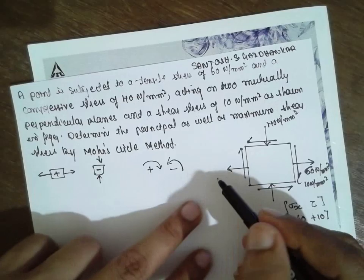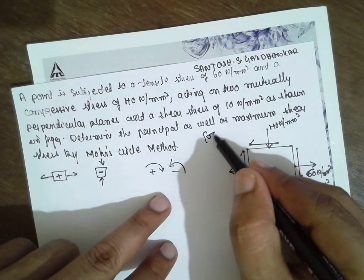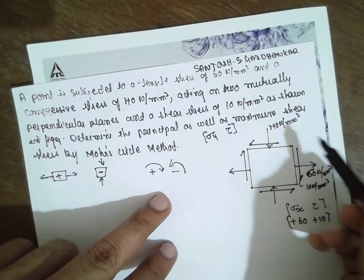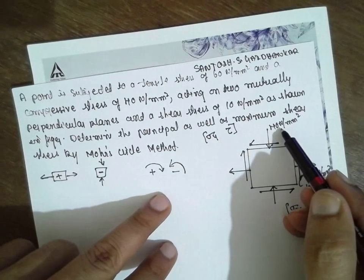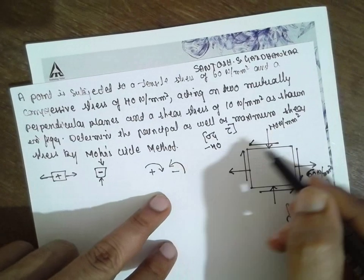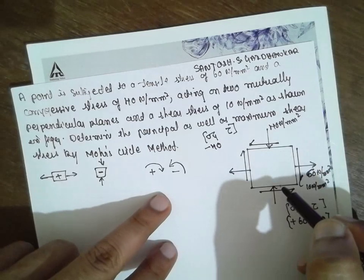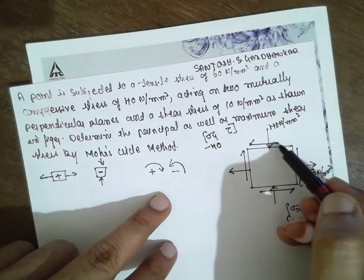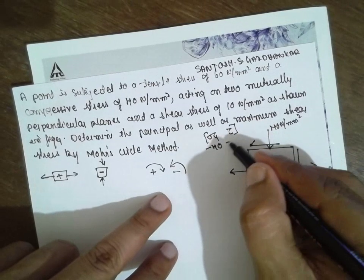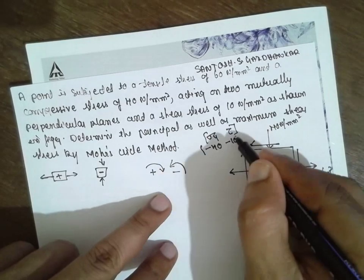Next, again I will write sigma y and tau. Sigma y value is 40 in compression, therefore it is minus 40. What is tau? It is rotating in anti-clockwise direction, therefore minus 10. This completes your first portion.